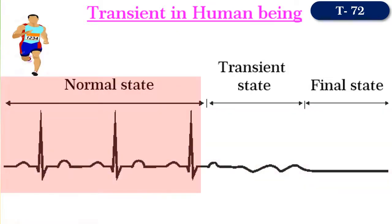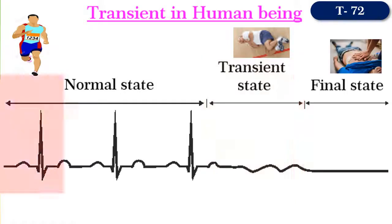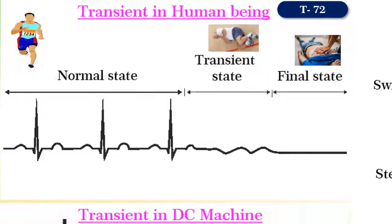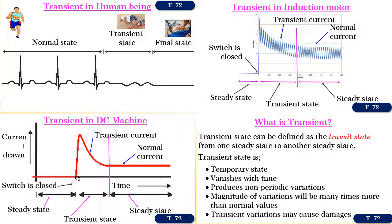The first part is the ECG when a person's activities are normal. The second part of the waveform is his ECG when he is experiencing a severe heart attack or cardiac arrest. The third waveform shows the final state — hope you know what it is. Similarly, transients occur in machines and in electrical networks too.